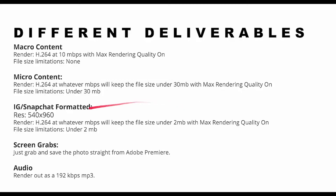Instagram/Snapchat story formatted — this is what's currently working for me. There's research for one-minute Snapchat videos, but I'm on Android and I still don't have that feature. The resolution is 540 by 960, and you want to try to keep it under two megabytes, otherwise it doesn't work that well in my personal experience — it's still going to be compressed, but try to keep it as close to how Snapchat videos are actually saved out on your phone. Screen grabs — just save the photo straight from Premiere. Audio — render out as 192 kilobits per second MP3.